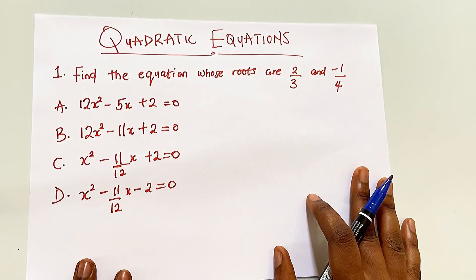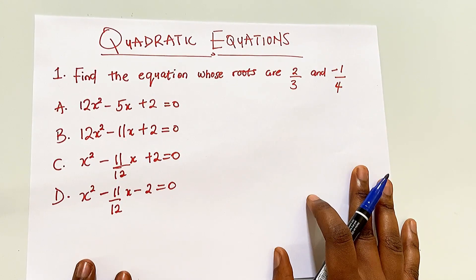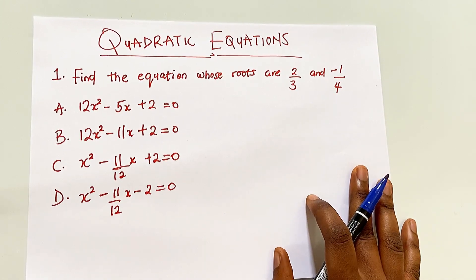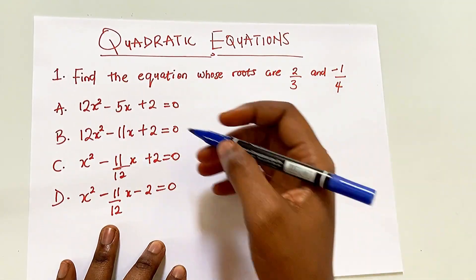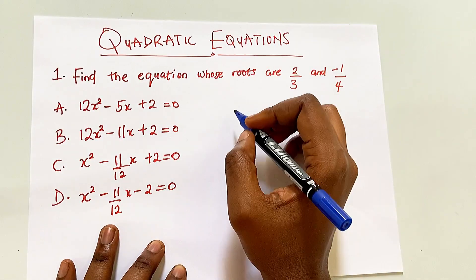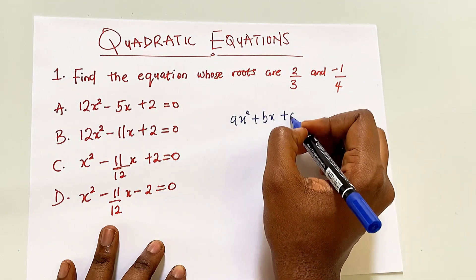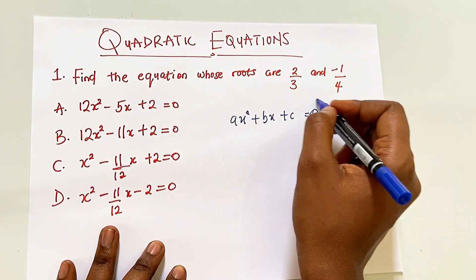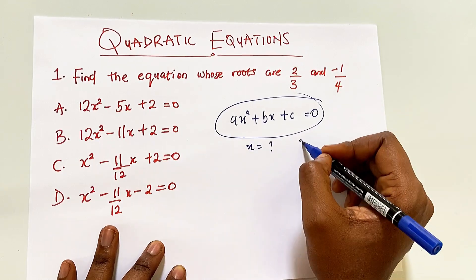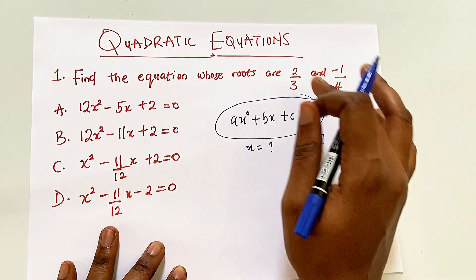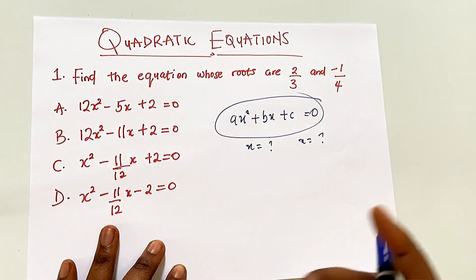The question says: find the equation whose roots are 2/3 and -1/4. Now, the first thing you need to understand — when the question says 'roots,' a quadratic equation is usually written in the form ax² + bx + c = 0. When you solve this expression, usually you have two values of x. So now they are saying, if these are the values of x, find the equation that existed.